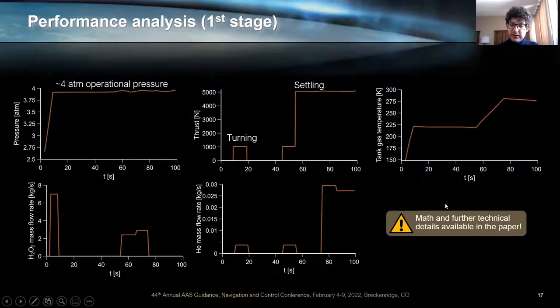How does this look in terms of thermodynamic analysis? And there is a lot of material in our paper to describe this. It looks like follows. First of all, we increase the pressure to four atmospheres. And we use a combination of the hydrogen peroxide tank and the helium tank that we use for pressurizing the system to balance the pressure and control the pressure of the system. By using that combination, the system turns out to be much more efficient. We increase the tank gas temperature up to 280 Kelvin, which is still considered a safe temperature limit. And we use one kilonewton for turning and five kilonewton for settling. Again, the math and further technical details are available in the paper.